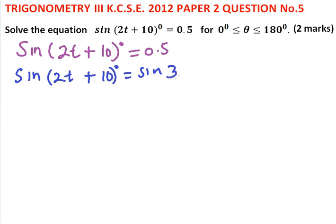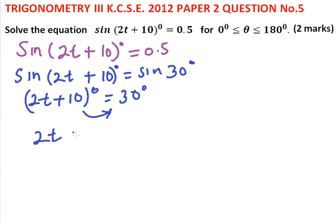So this means sin(2t + 10)° = sin 30°, and therefore 2t + 10° = 30°. We take 10 to the other side, so 2t = 20°, t = 10°.